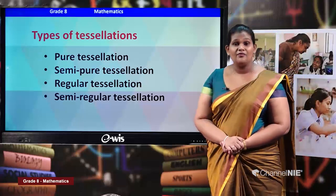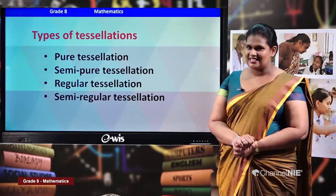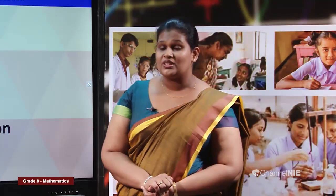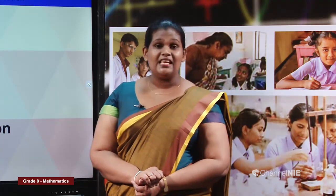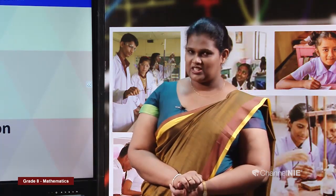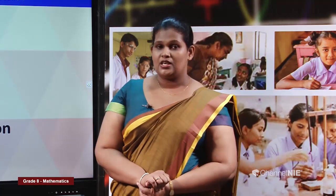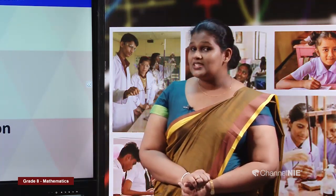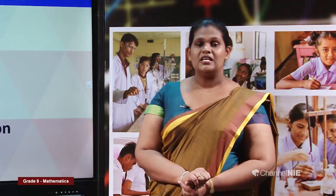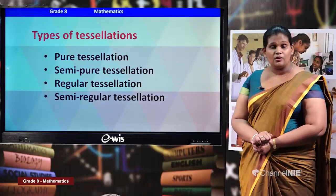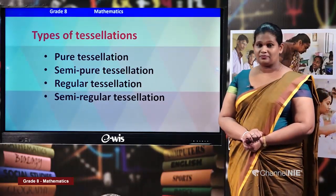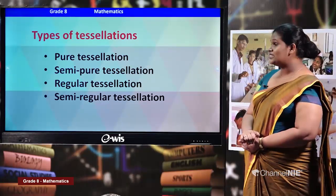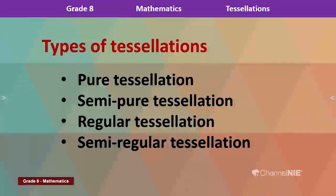Now we are going to talk about the types of tessellations. In grade 7 you learned on two types: pure tessellations and semi-pure tessellations. This year we are going to learn on two more types: regular tessellations and semi-regular tessellations. So up to now we are going to learn four types: pure tessellation, semi-pure tessellation, regular tessellation, and semi-regular tessellation.